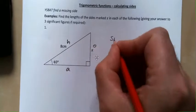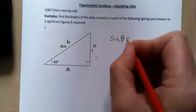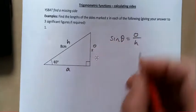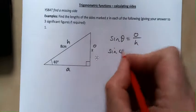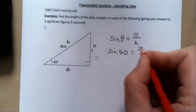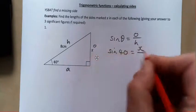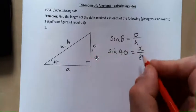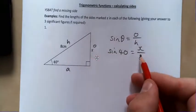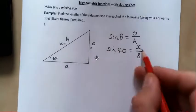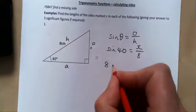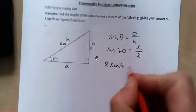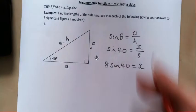So it's going to be sine theta equals o over h. Sine theta in this case is 40 equals x. I've changed for my o over h. We need to look and see how are we going to get the x on its own. If we multiply both sides by 8 we would end up with 8 sine 40 equals x.